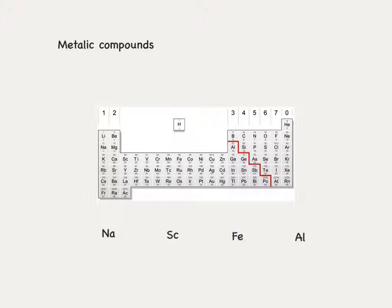Metallic compounds then, some examples. Here we've got sodium, scandium, iron, and aluminium.